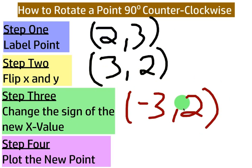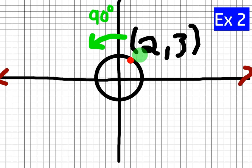So new point's going to be negative 3, 2. Now we're just going to plot the new point. So a new point is going to be negative 3, 2. There it is, the blue point.